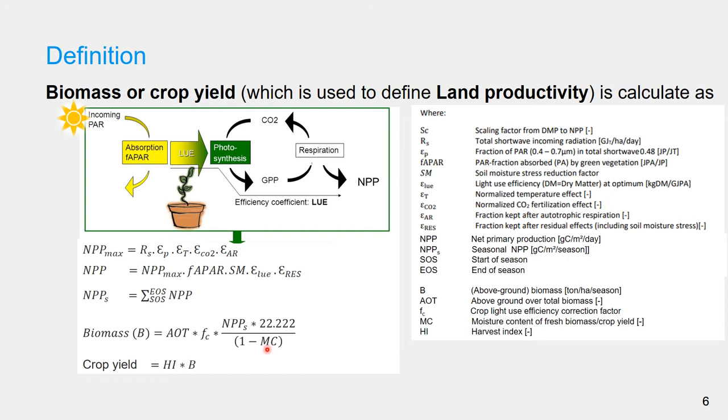Then multiplying by the light use efficiency factor, which is the ratio of light use efficiency of the crop that the biomass is going to be calculated over the light use efficiency of the crop where the NPP is derived from, which could be over the C3 crops. Then finally multiplied by the above over the total biomass fraction.